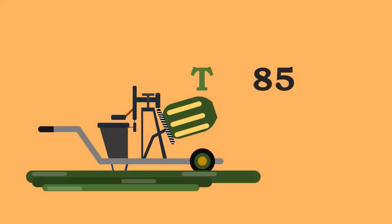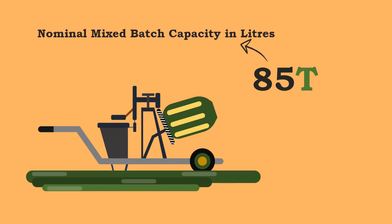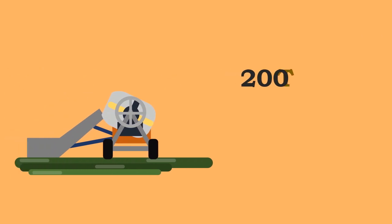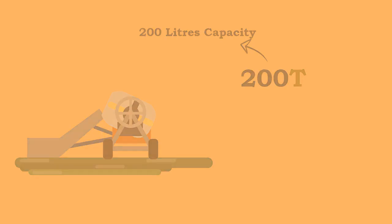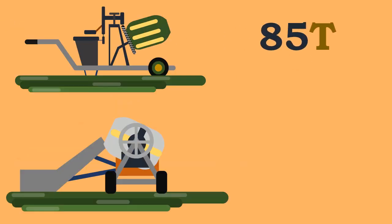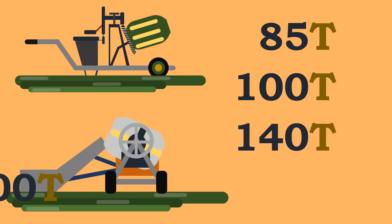These types of mixers are designated by a number which represents their nominal mixed batch capacity in liters, followed by 'T' which represents the tilting type of mixer. For example, a 200T mixer represents a tilting type mixer of 200 liters capacity. The standard sizes available in markets are 85T, 100T, 140T, and 200T.